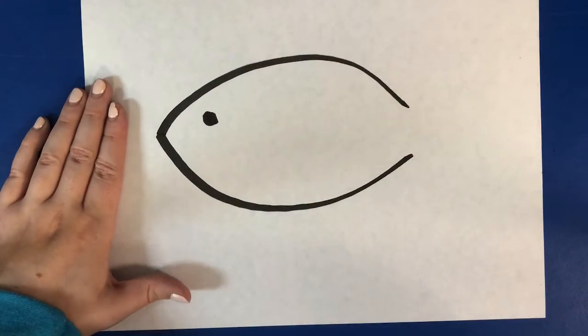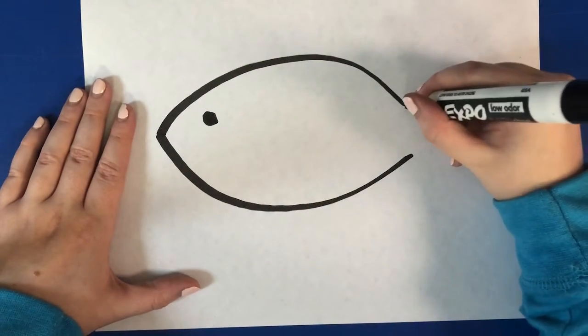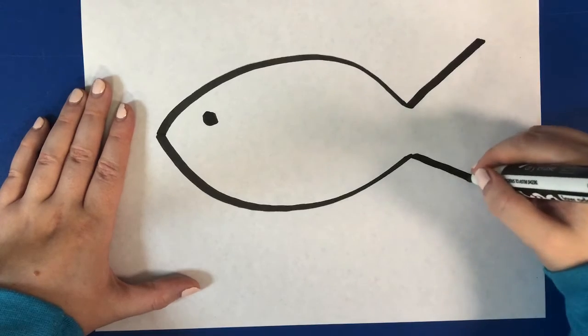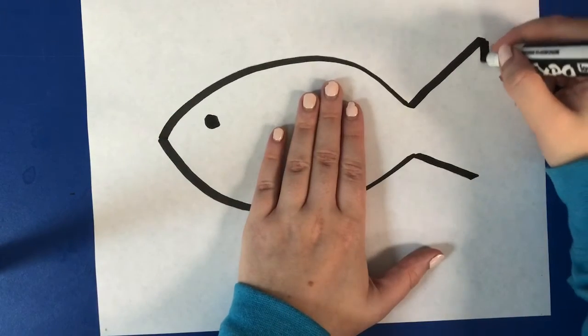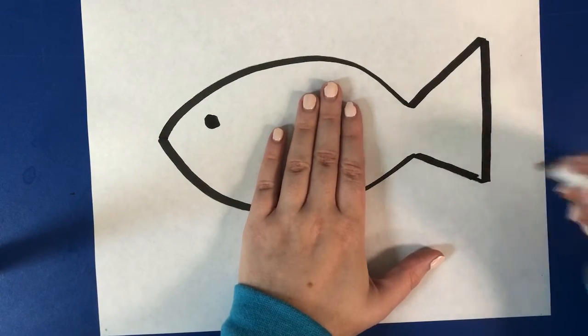You can go ahead and make an eye if you want. You want to do a different eye, that's okay. Let's bring our tail up and down and then we will connect those two together and now we have a cute little fishtail.